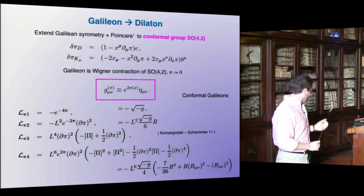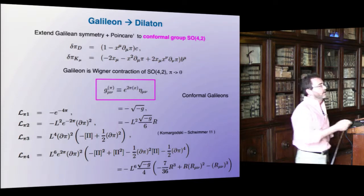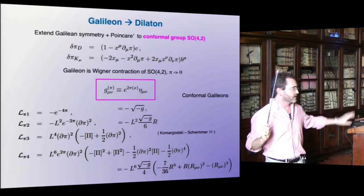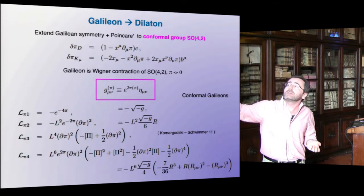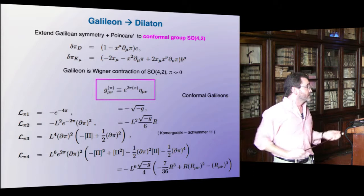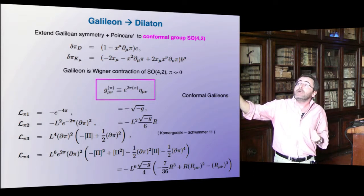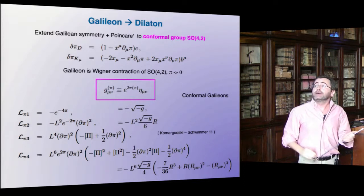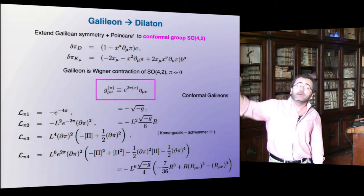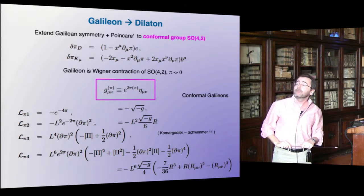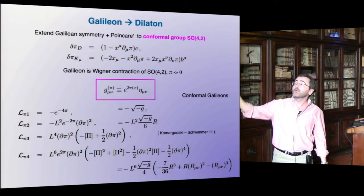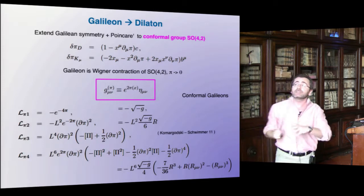How do we write a Lagrangian for a dilaton? One simple way is to use an effective metric: γ_μν = η_μν · e^{2π}, and write operators which are diffeomorphism invariant with respect to this metric. In this way one gives rise to a Lagrangian which nonlinearly realizes the conformal group, because a conformal transformation of the metric can be compensated by a shift of the dilaton. This gives rise to conformal Galileans — a particular set of operators that you can write. They are the same as Galileans but under this extended algebra; they are complicated and can be written in terms of invariants of this metric, including the curvature and a cubic polynomial of the Ricci tensor.